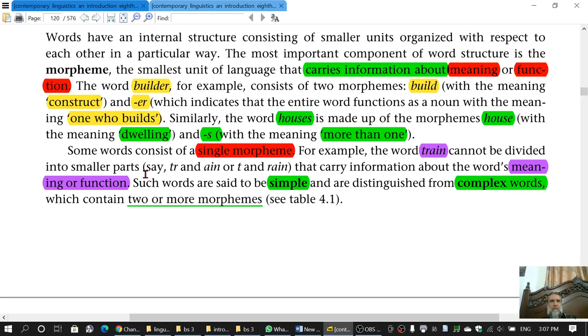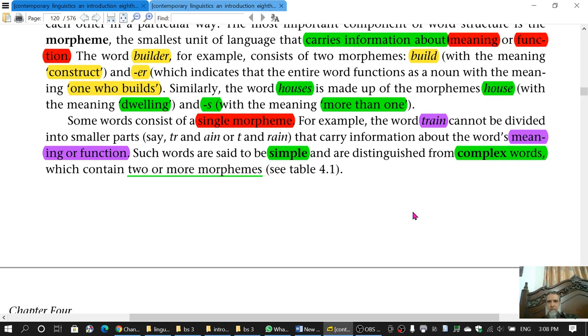And it cannot be divided into smaller parts. T R and A I N, this division, or T or R A I N, this division is not possible. And it carries information about the word's meaning or function. So this word train consists of a single morpheme, and such words which consist of single morpheme are called simple words.